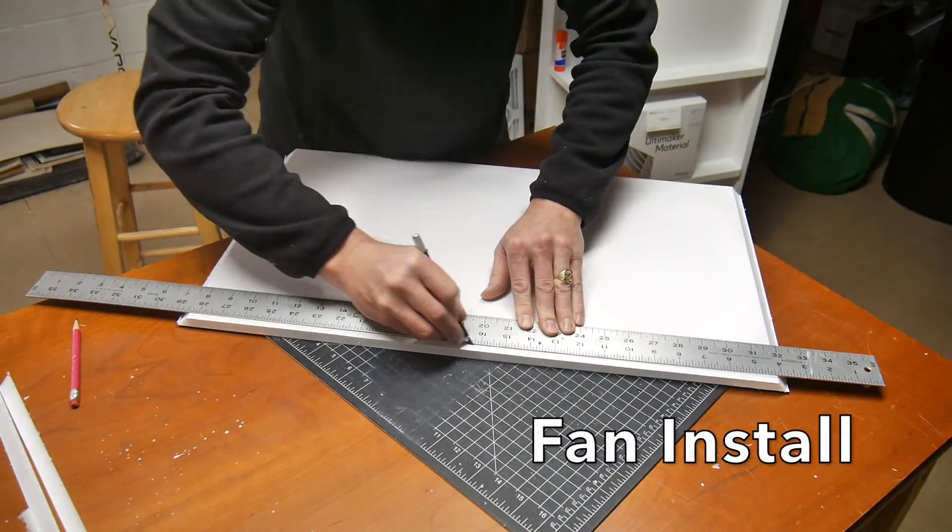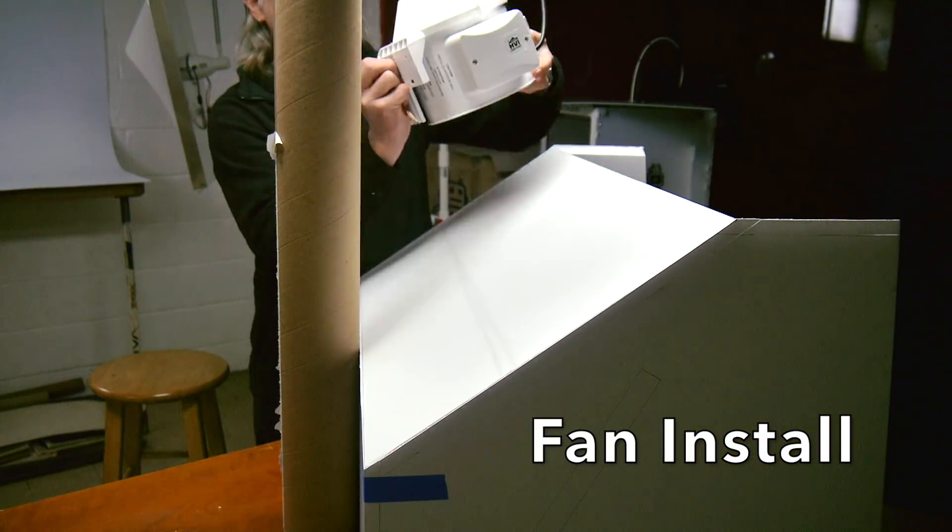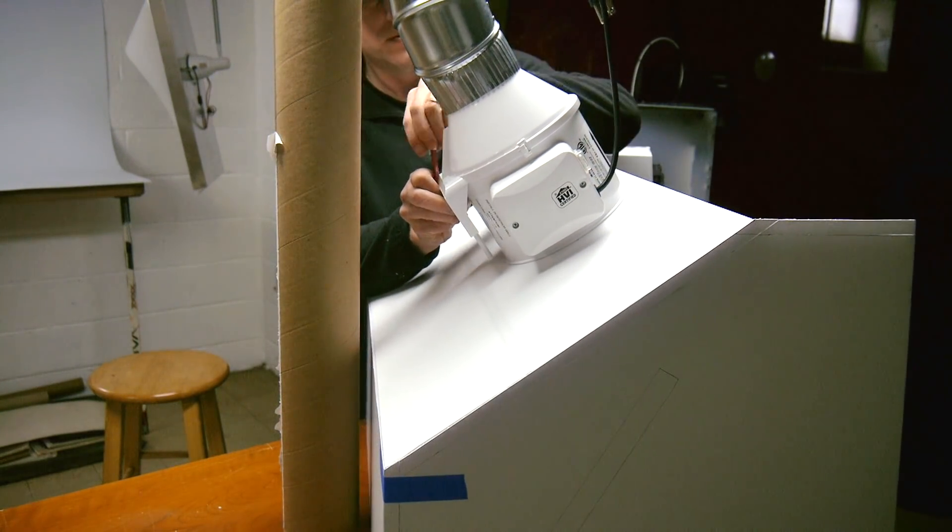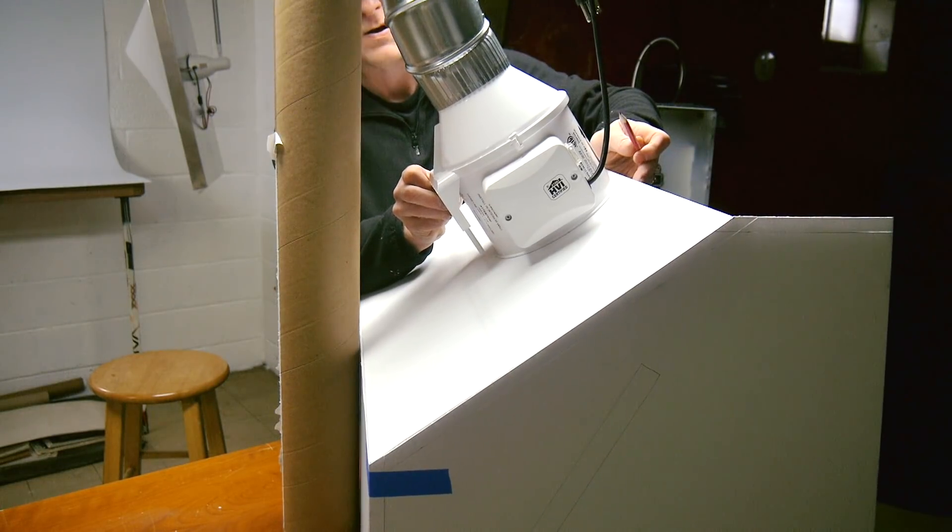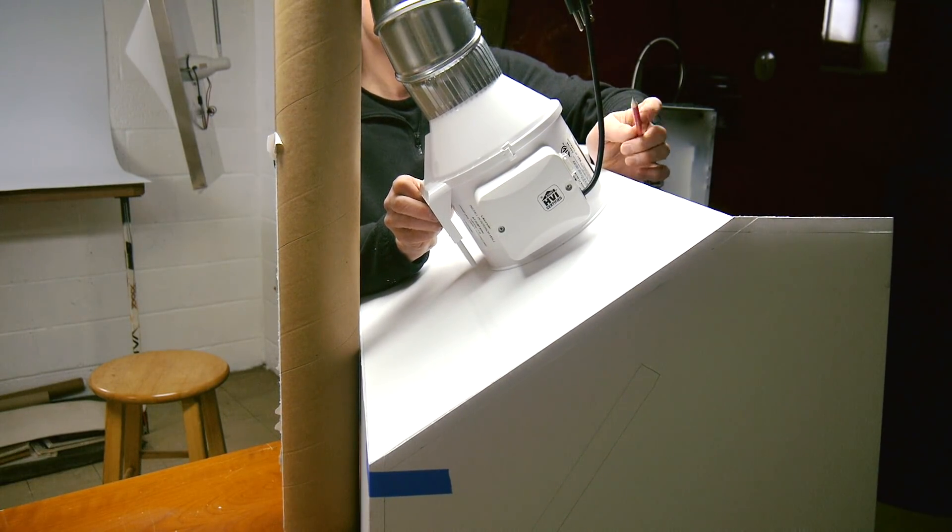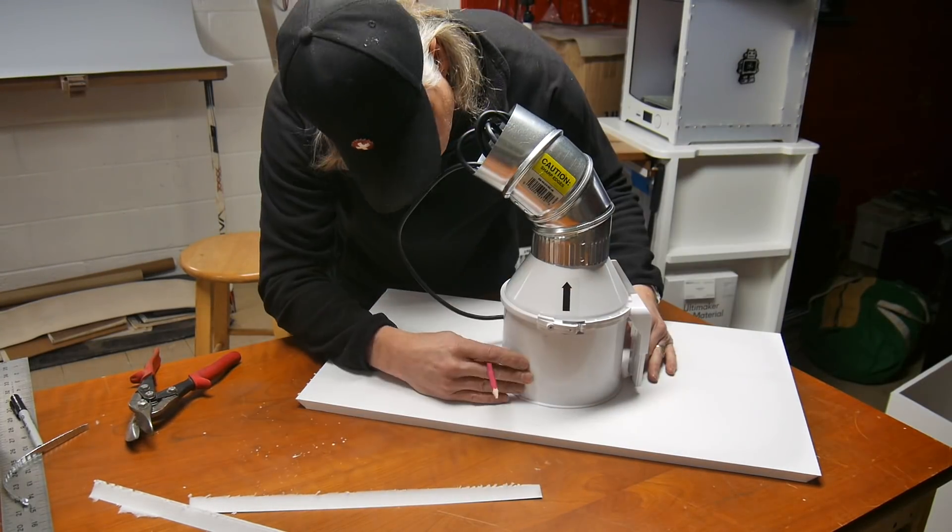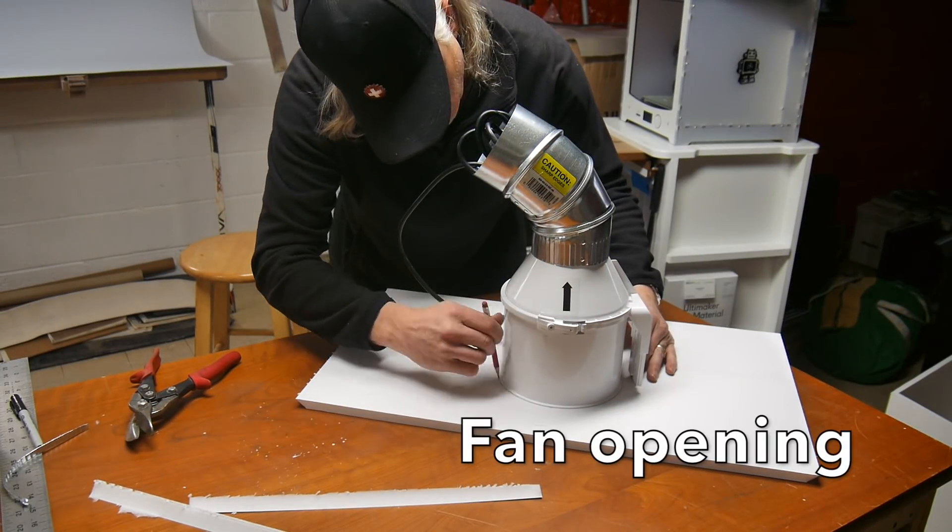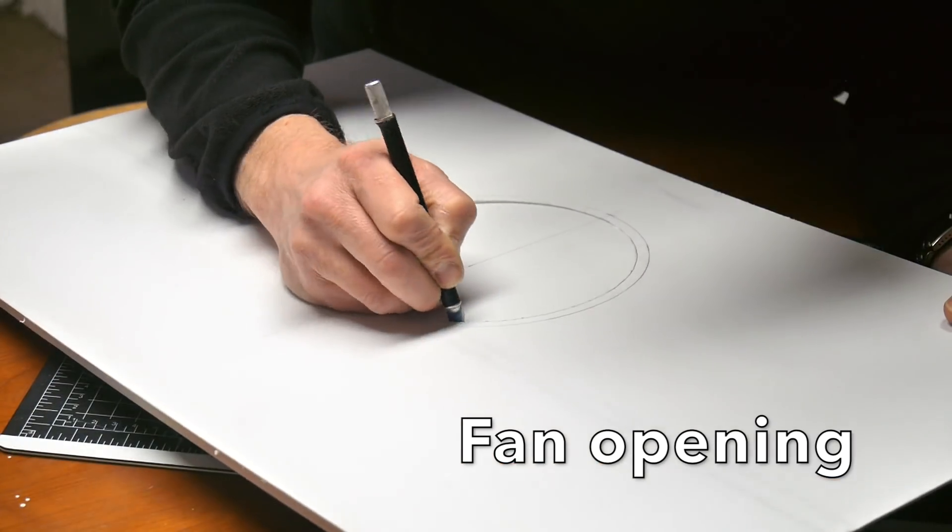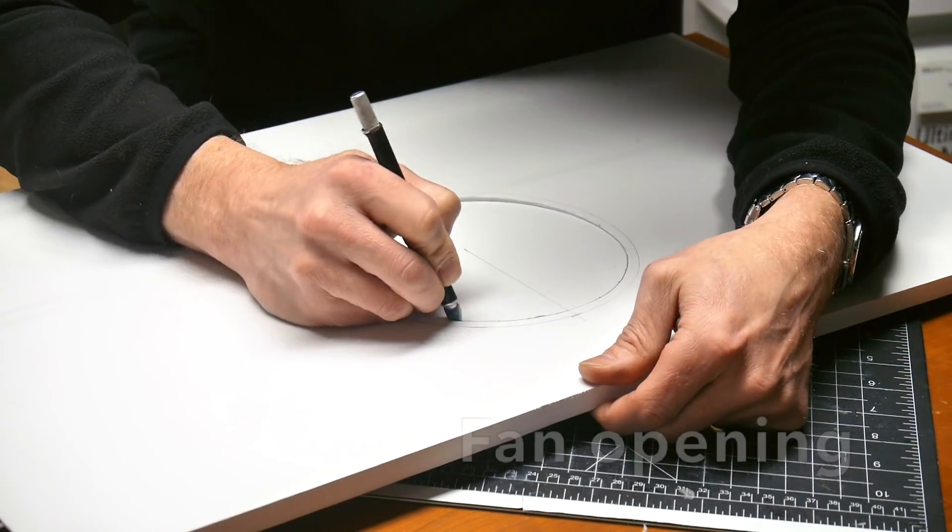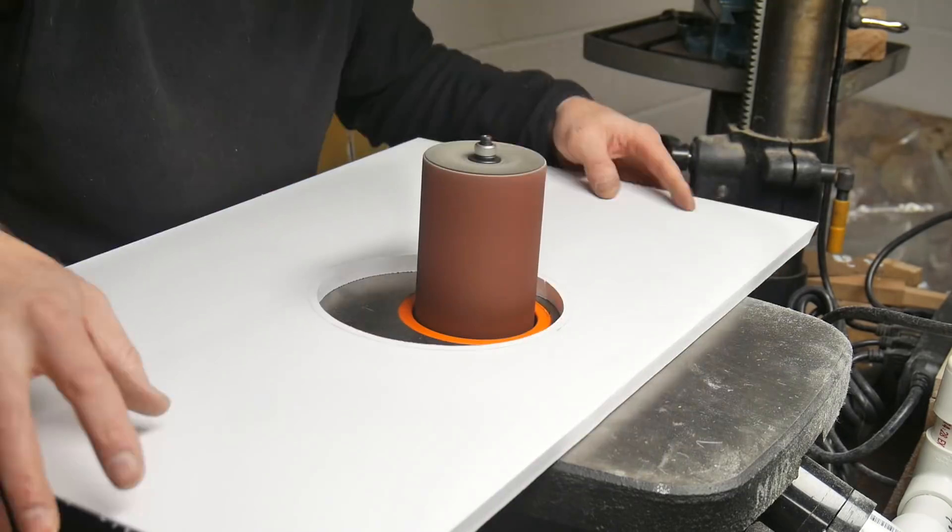This is the top panel where the fan is going to get installed. So at this point when I was building it, I still had planned to use a flexible or adjustable 90 degree elbow attached to the fan. You can see that on the top of the fan. Here I'm cutting out the circle for where the fan is going to go. I end up ditching that 90 degree elbow and use just a flexible piece of hosing.